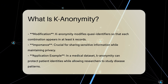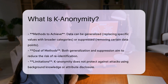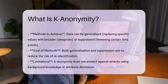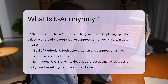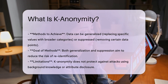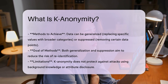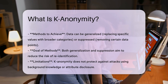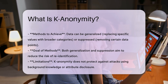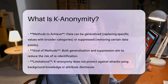To achieve K-anonymity, data can be generalized or suppressed. Generalization involves replacing specific values with broader categories. Suppression removes certain data points altogether. Both methods aim to reduce the risk of re-identification.